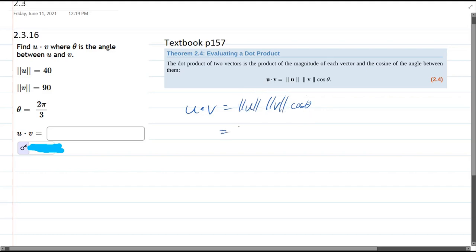So mine are 40 times 90 times cos 2π over 3. 4 times 9 is 36, 100, cos 2π over 3.